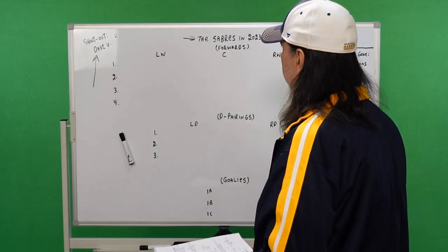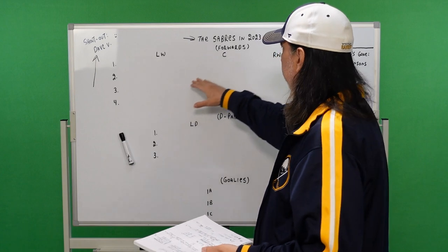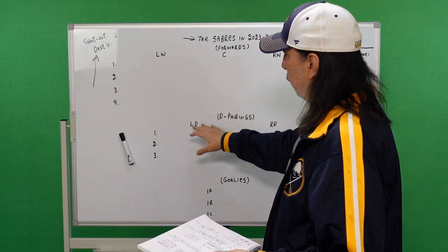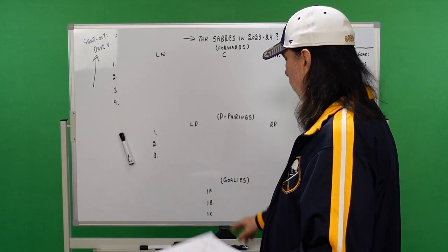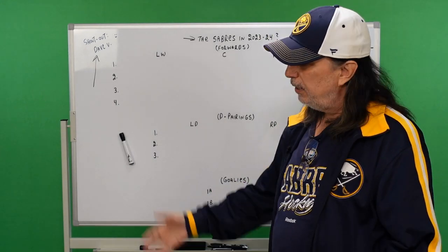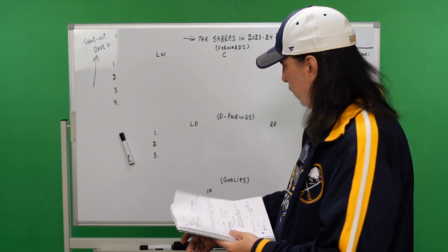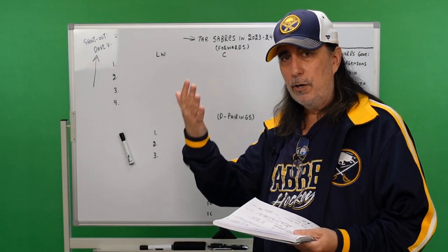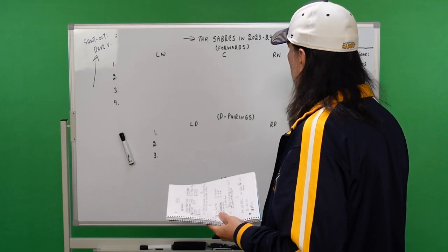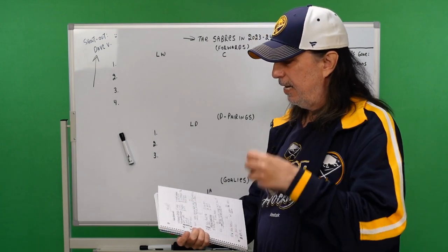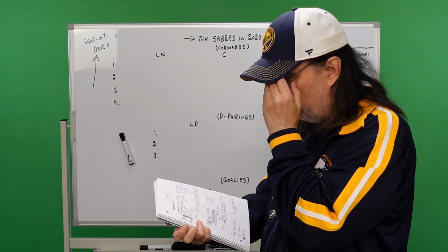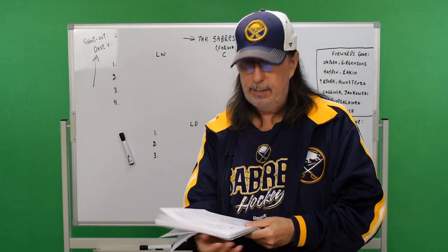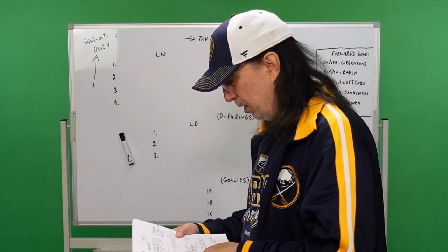Now what I've done is I've got the four lines, the three pairings. I'm going to put a seventh defenseman and the three goaltenders. I put 1A, 1B, 1C because we just don't know what the future holds. And all are doing well. So we're going to have a little fun with this guys, and I will try to keep it moving as quick as possible.